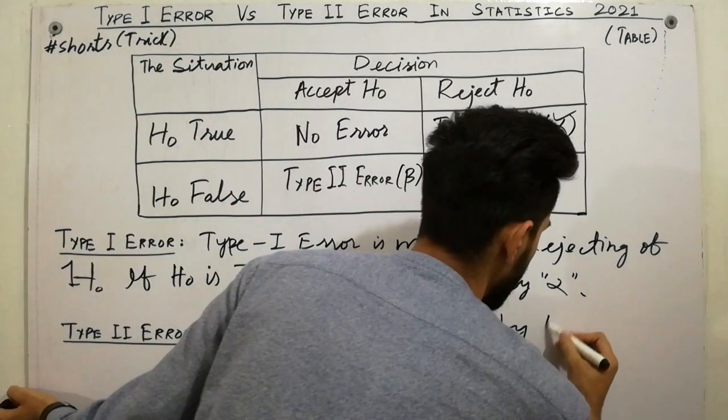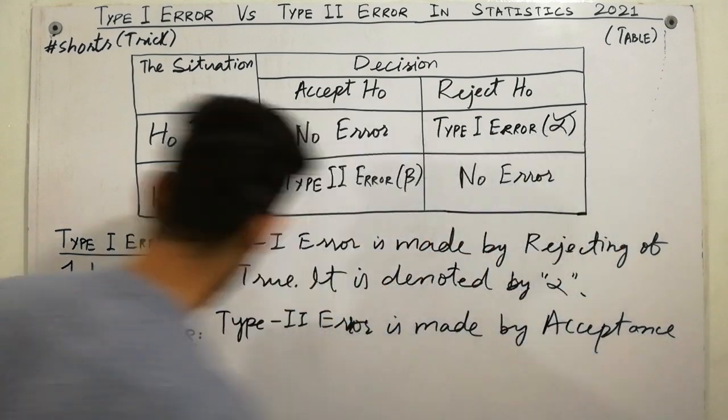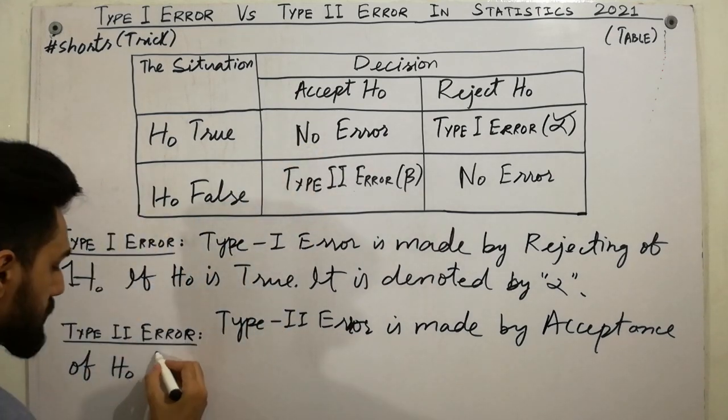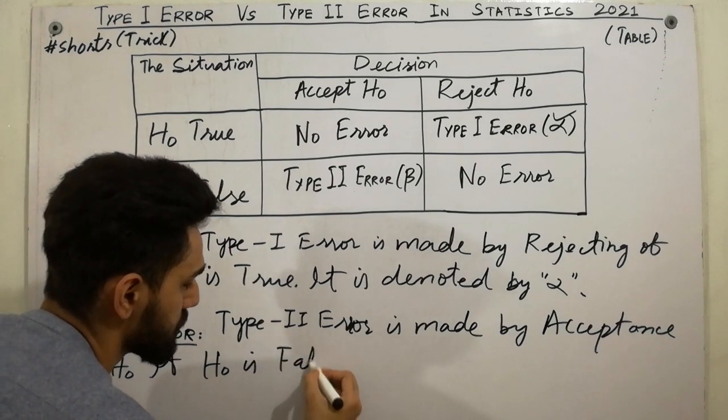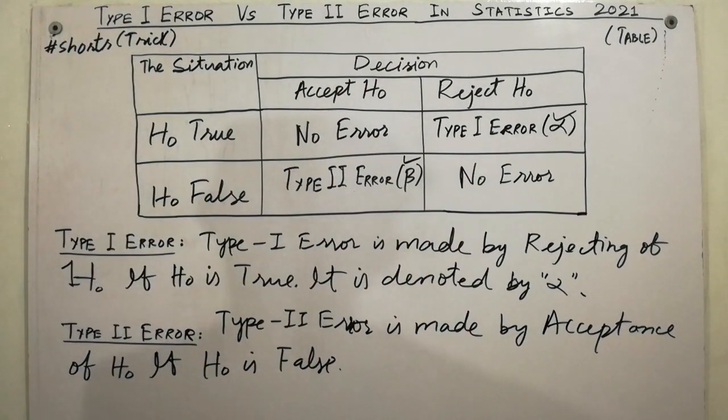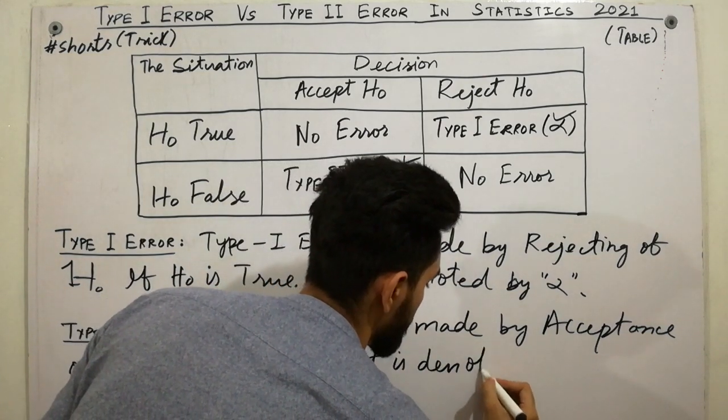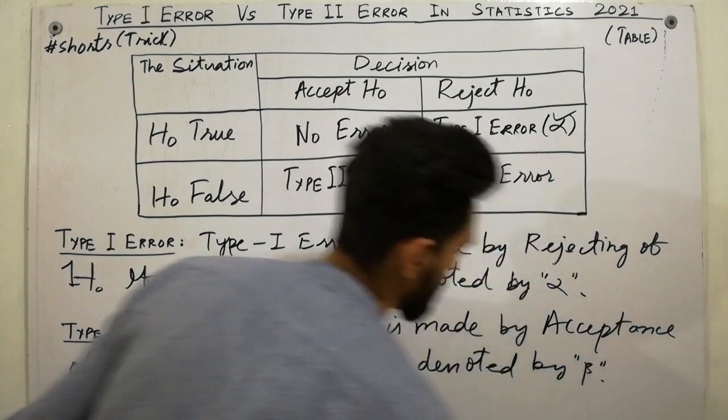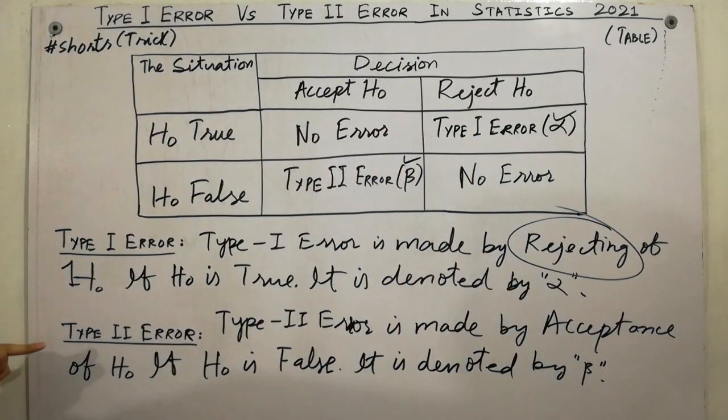Acceptance of H₀. Is made by acceptance of H₀ if H₀ is false. If H₀ is false. So similarly it is denoted by alpha and Type II error is denoted by beta. You can write very simply it is denoted by beta.